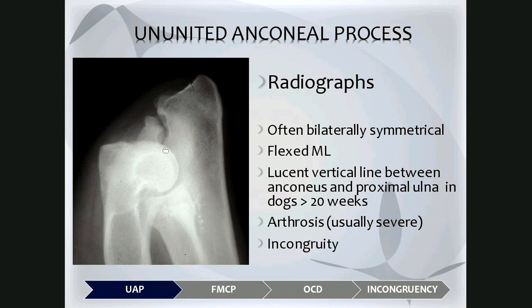In this case, there's a lucent jagged vertical line between the anconeal process and the rest of the ulna in dogs more than 20 weeks of age. Arthrosis that develops can be quite severe in this specific cause of elbow dysplasia, and incongruency may also be seen.